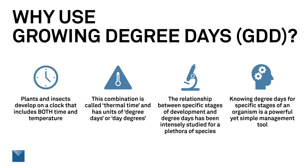The relationship between specific stages of development for plants and insects has been studied intensely for many species, and we know this pretty well. Knowing the degree days required for a specific organism to move through a specific stage is a powerful yet simple management tool — it allows us to know when to apply nitrogen to a plant or when to apply a pesticide to an insect to manage our system optimally.